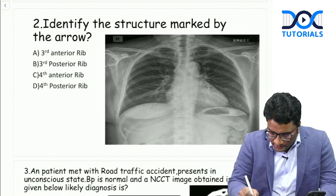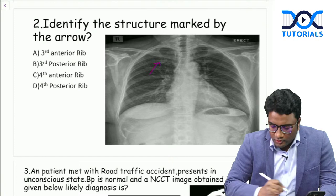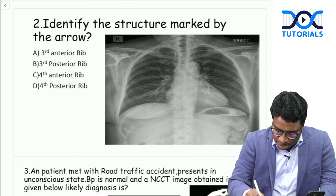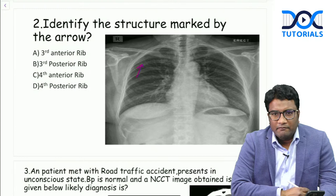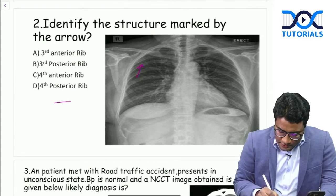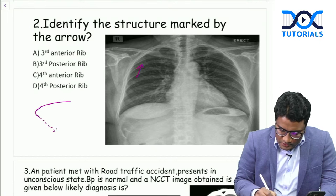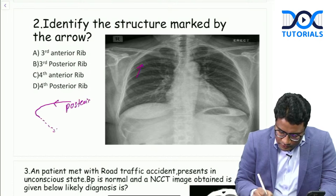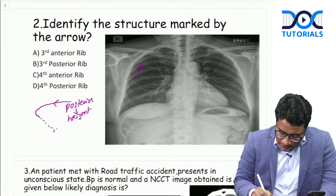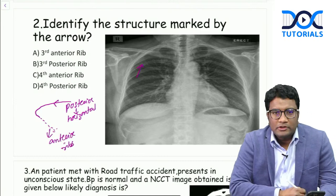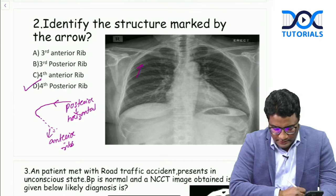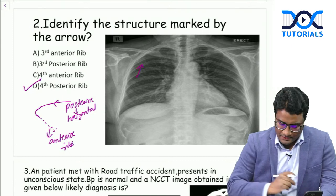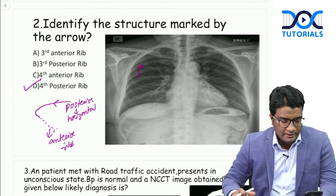Next question: identify the structure marked by the arrow. The arrow was placed laterally on the image. Remember - when counting ribs, posterior ribs are horizontal and anterior ribs are oblique. This structure is a posterior rib, which is horizontal. Most students answered fourth posterior rib, and that is correct. I hope you answered it as the fourth posterior rib in the exam.